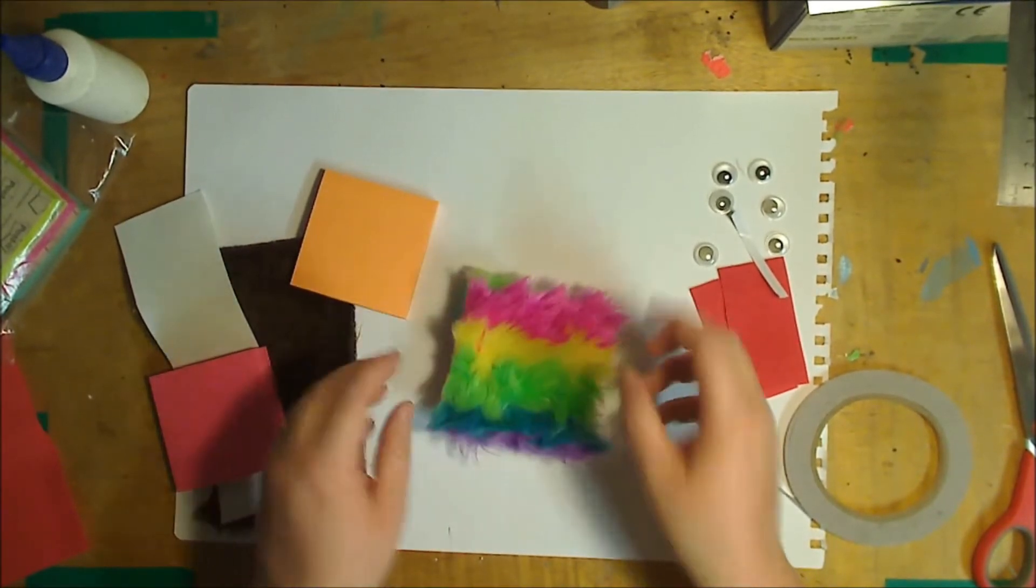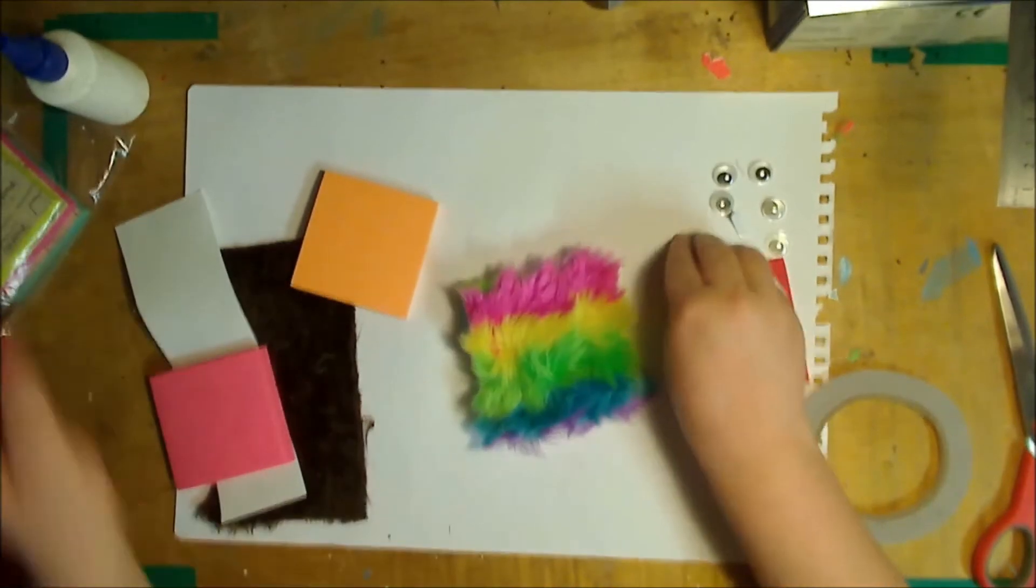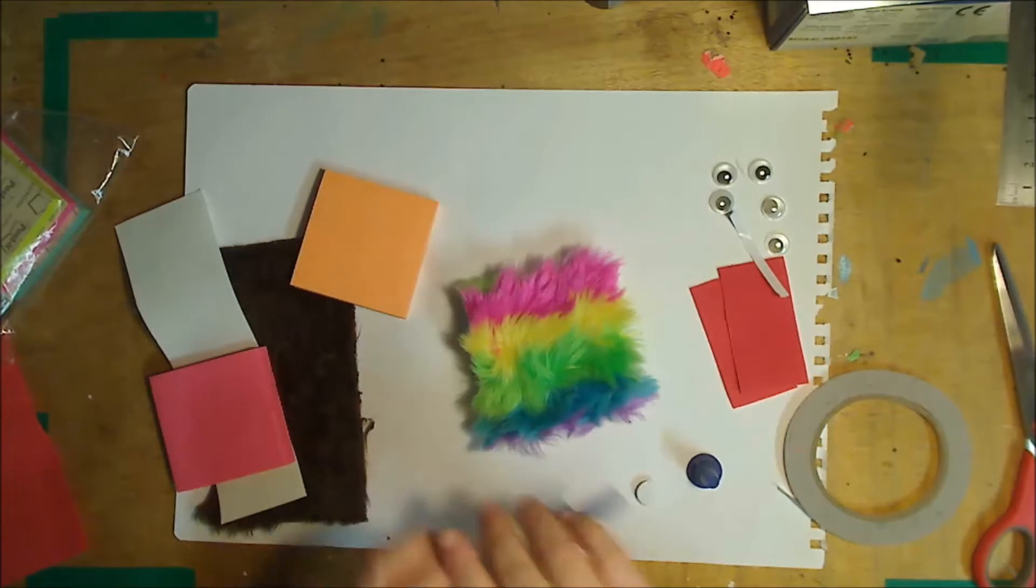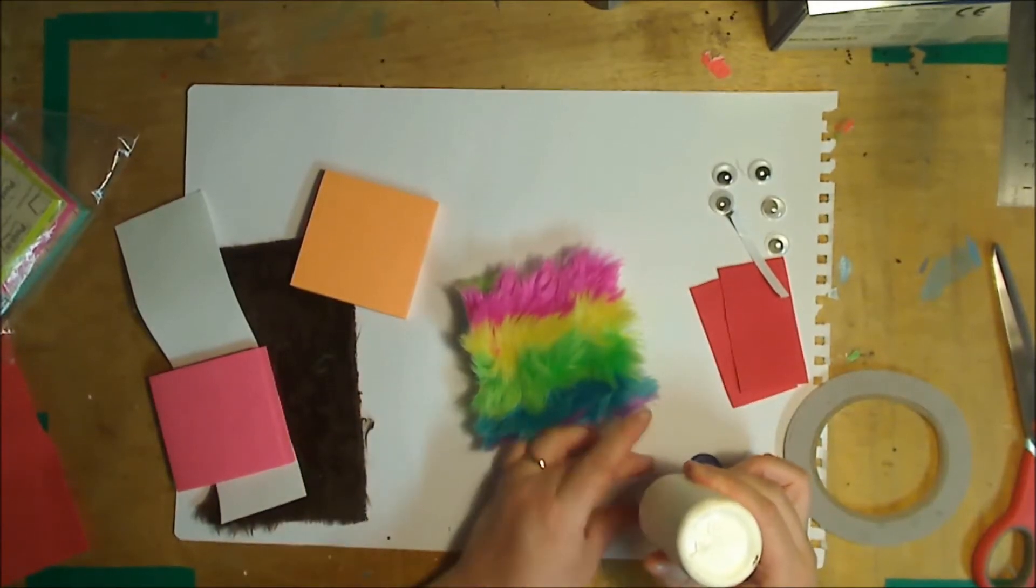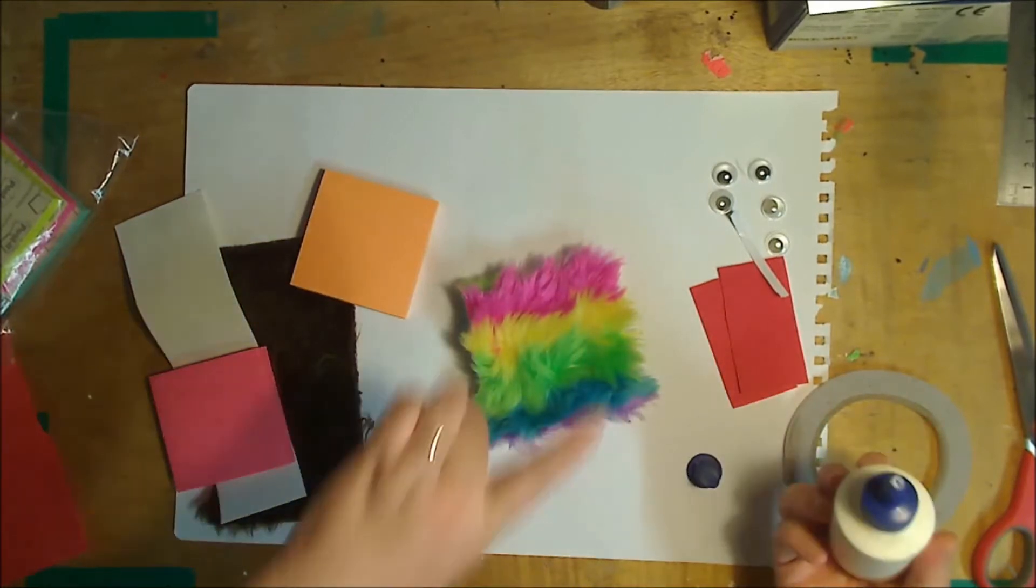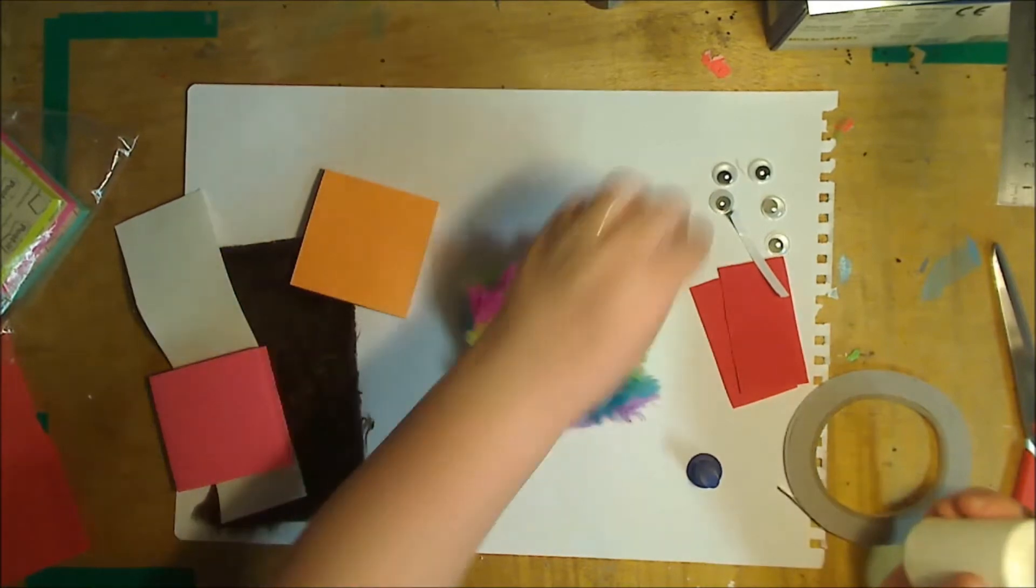Next step is to add some eyes. Now in the monster book, the monsters has three eyes, so our little ones are going to have three little eyes. So I'm just using a little bit of wood glue to randomly attach my eyes.